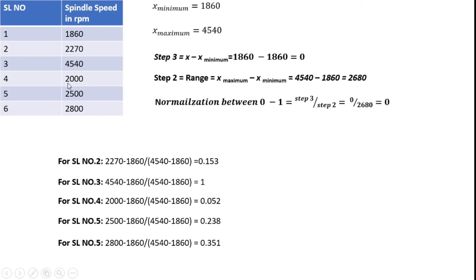Similarly, I consider serial number 4. Here the x value is 2000 minus minimum 1860, divided by 4540 minus 1860. I got 0.052. From this, I can get the normalized value within 0 to 1. I can calculate easily and also reduce the redundancy available with the data. I can get n number of values between 0 to 1.